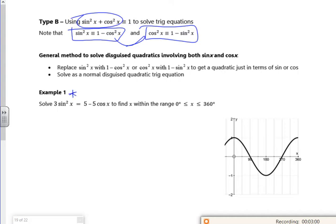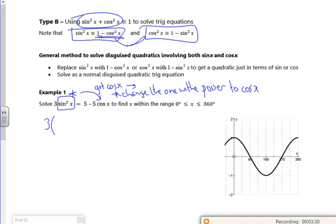So if you look at this example, it's got cos here. So that's what I want to change it to. Now I must change the one with the power. So it's got cos, I'm going to change the one with the power to cos x. So I've got three lots of, so instead of sin squared x, I've got 1 minus cos squared x.